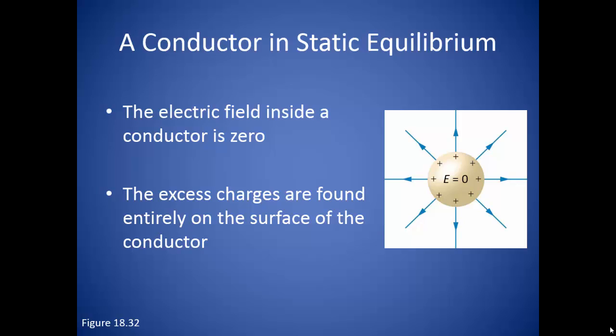Basically what is happening here is that the excess charges are repelling each other and since they are inside a conductor where the charges are free to move, they will move to the edges in order to get as far away from each other as they possibly can. So inside the conductor you have a balance of positive and negative charges and therefore a net charge of zero.